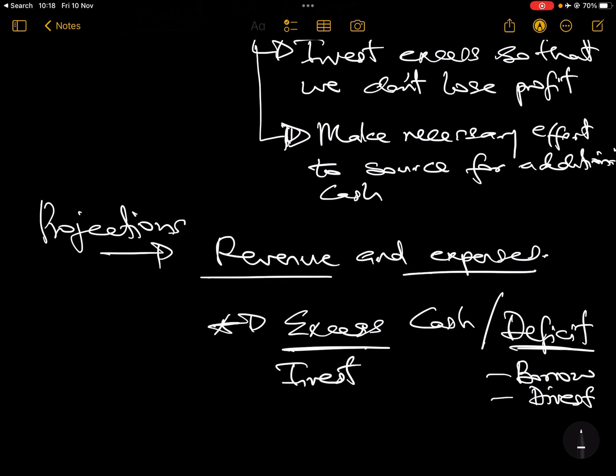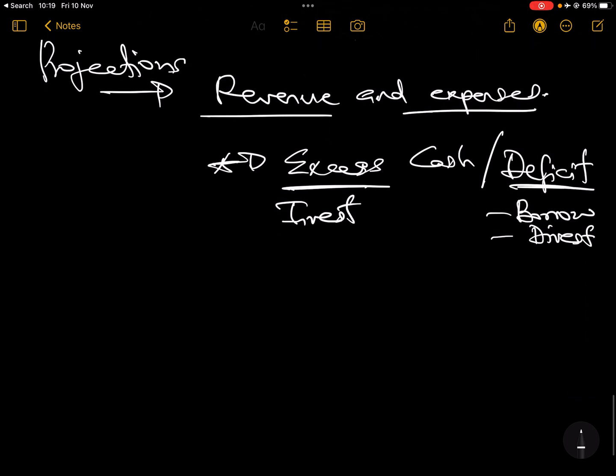Once you do all of this, you're able to predict how much cash you'll need in the future. If you have excess cash you invest; if you have a deficit you source for cash. That's how you manage your cash — remember the objective: don't keep too much and don't keep too little. In the next two videos I'll be solving questions on inventory management and cash management, so please stay tuned, like, share, and comment if you have questions.